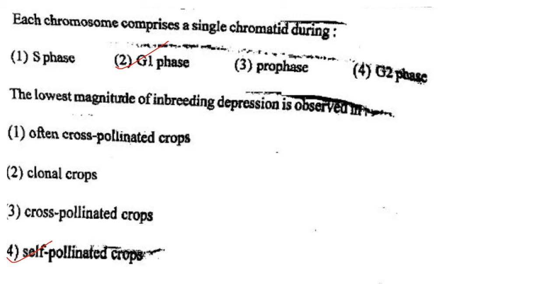Next one: Each chromosome comprises a single chromatid during option 1, S phase; option 2, G1 phase; option 3, prophase; option 4, G2 phase. Answer is option 2: G1 phase.